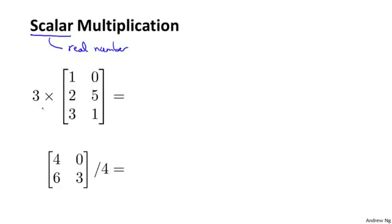So let's take the number 3 and multiply it by this matrix. And if you do that, the result is pretty much what you'd expect. You just take your elements of the matrix and multiply them by 3 one at a time. So 1 times 3 is 3.